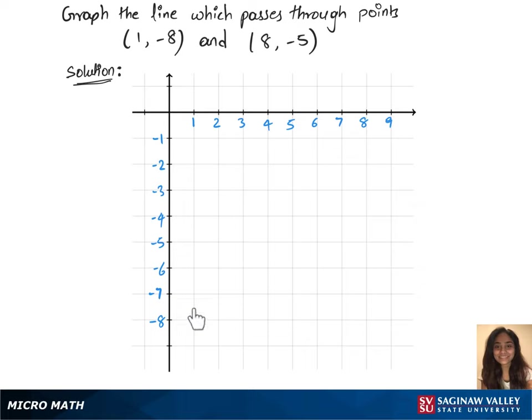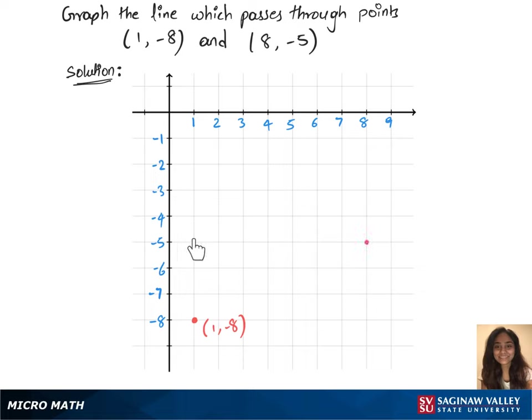The first point is (1, -8), which is right there — let's label it 1 comma minus 8. The second point is (8, -5), which is right there — let's write 8 comma minus 5.